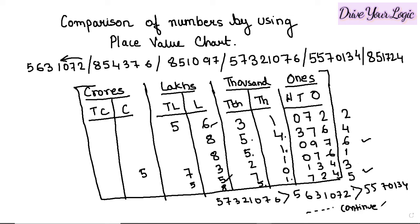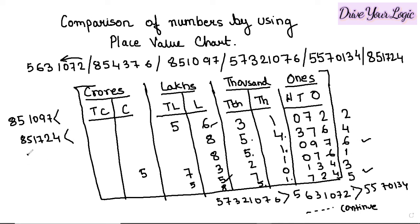For ascending order, it is just the opposite. Number six will be the smallest, so write it first: 8,51,096 less-than sign, then number five: 8,51,724 less-than sign, then 65, then number four: 8,54,376. Continue in this way with smaller-than signs for the full ascending order.